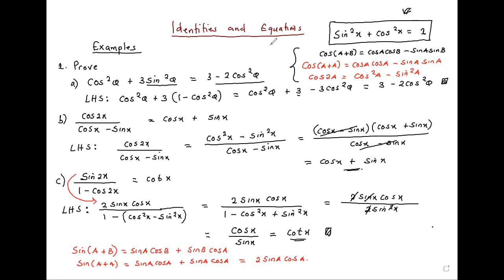Let's repeat example C. So we have already done the numerator: sine 2x is the same as 2 sine x cos x as an identity. And for the denominator we have 1 minus cos 2x. We've seen in B that cos 2x is the same as cos squared x minus sine squared x. So we substitute: where there's cos 2x we substitute cos squared x minus sine squared x. There's a minus outside the bracket so when we expand...